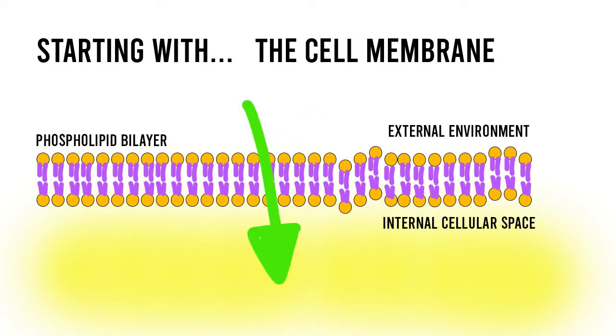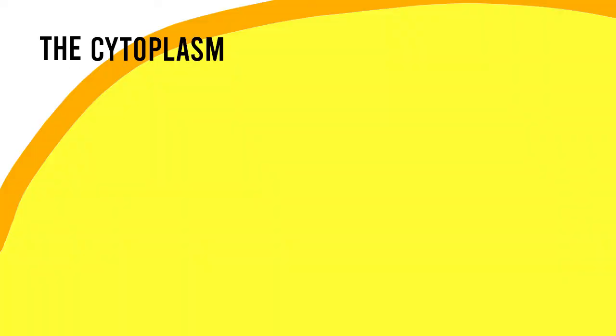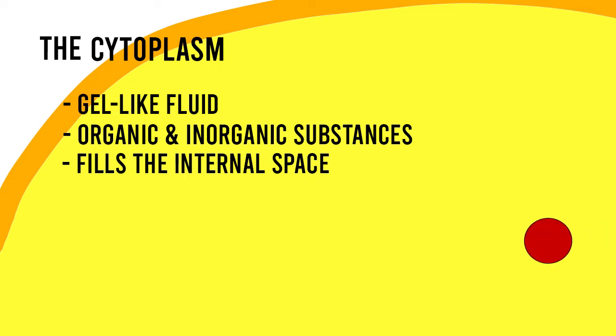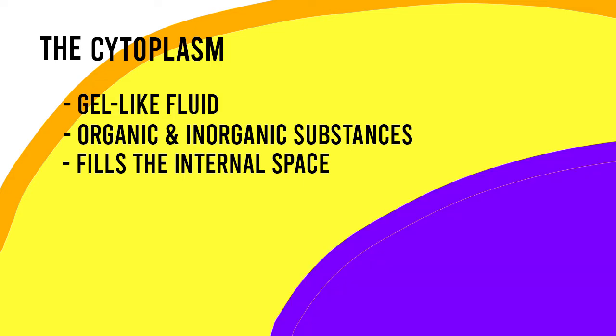Once you pass through the cell membrane, you'll encounter a structure known as the cytoplasm. The cytoplasm is the gel-like fluid made up of organic and inorganic substances which fills the internal space of the cell enclosed by the cell membrane. The cytoplasm provides the environment necessary for crucial chemical reactions to occur that ensure the cells function. In eukaryotic cells, the cytoplasm encapsulates various organelles which we'll be talking about later in this video.